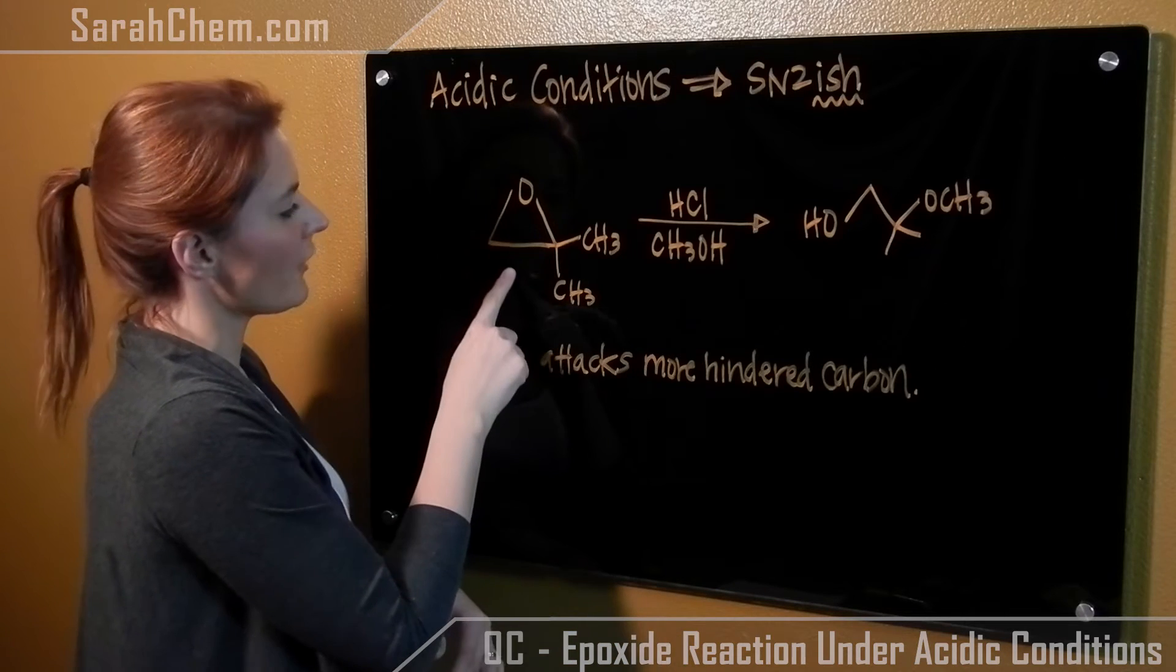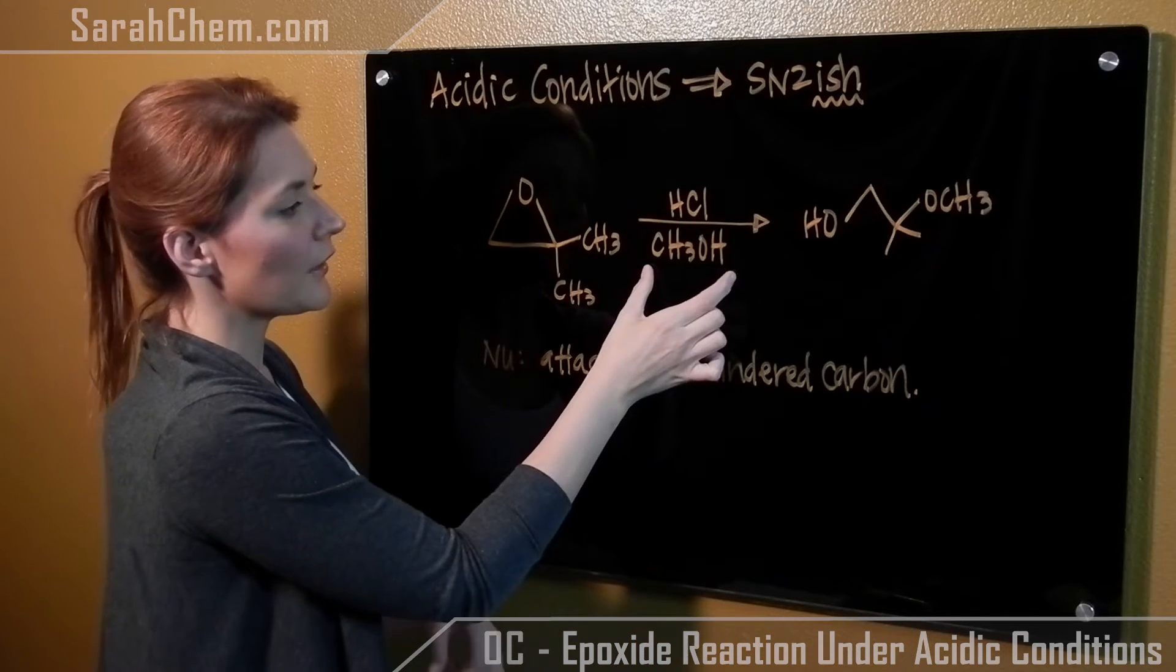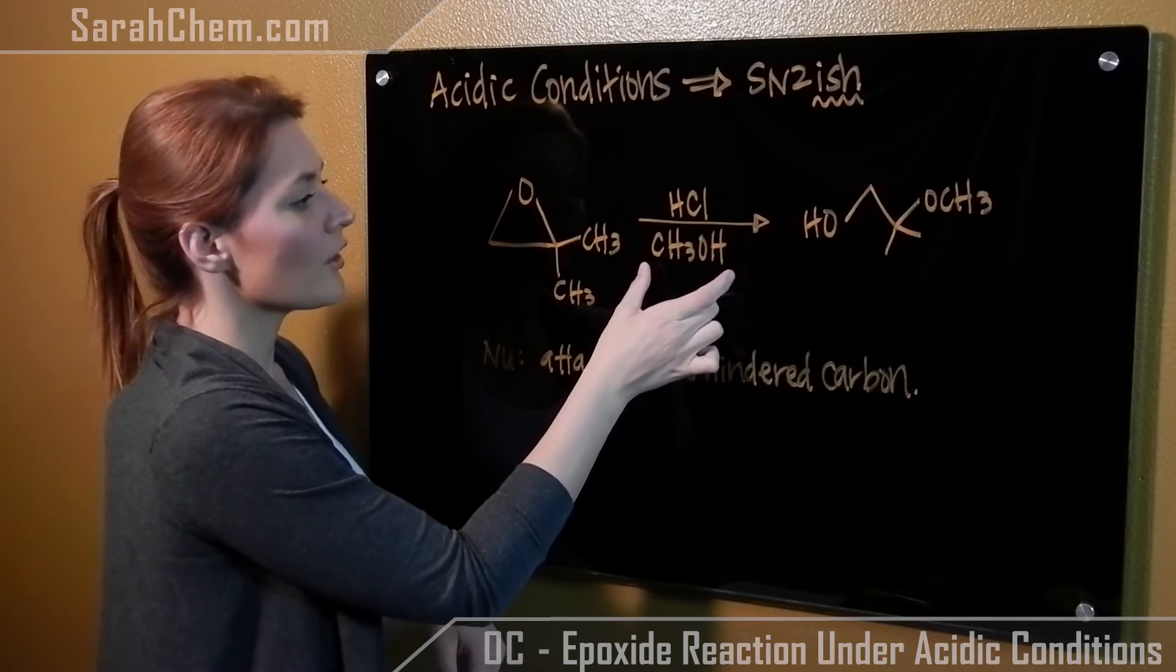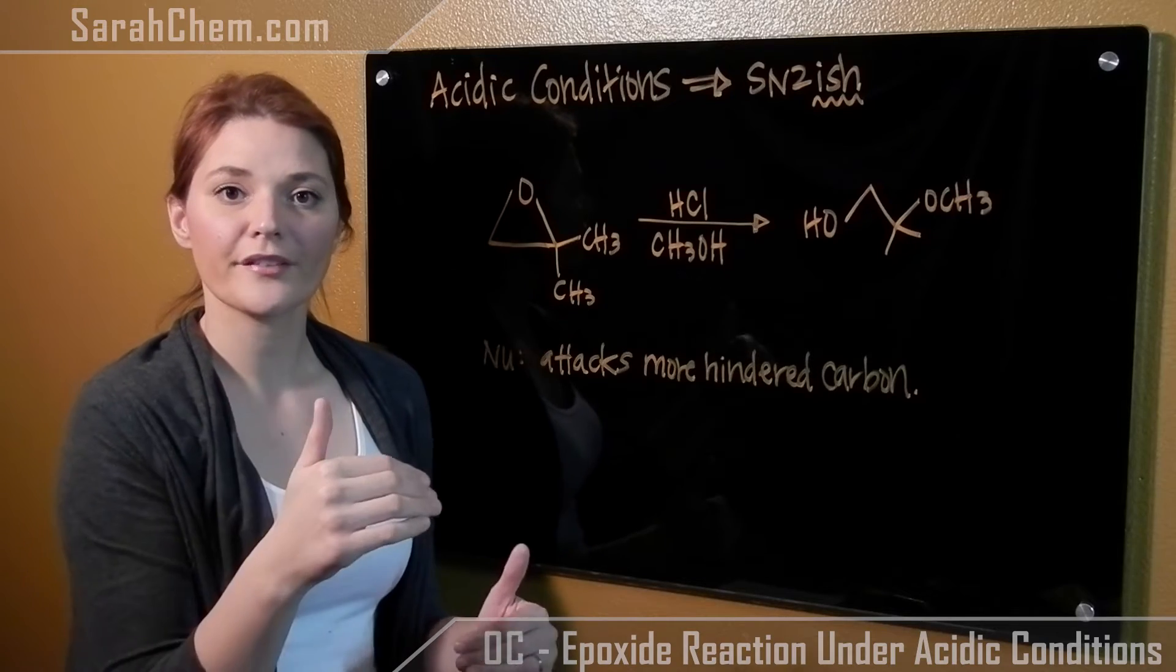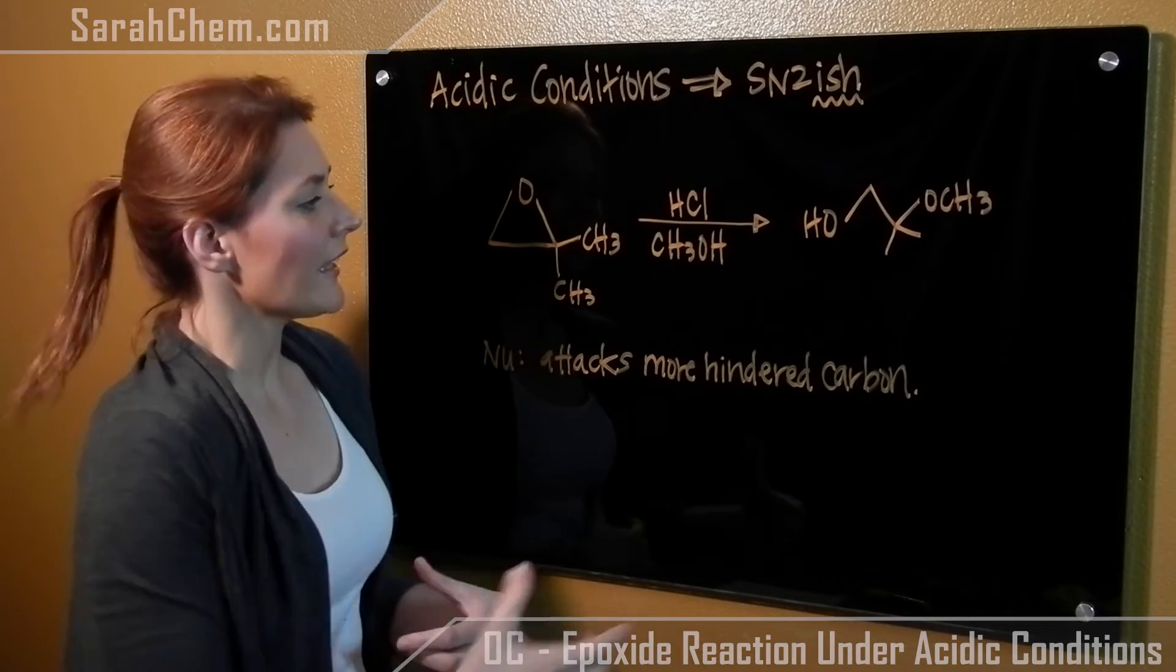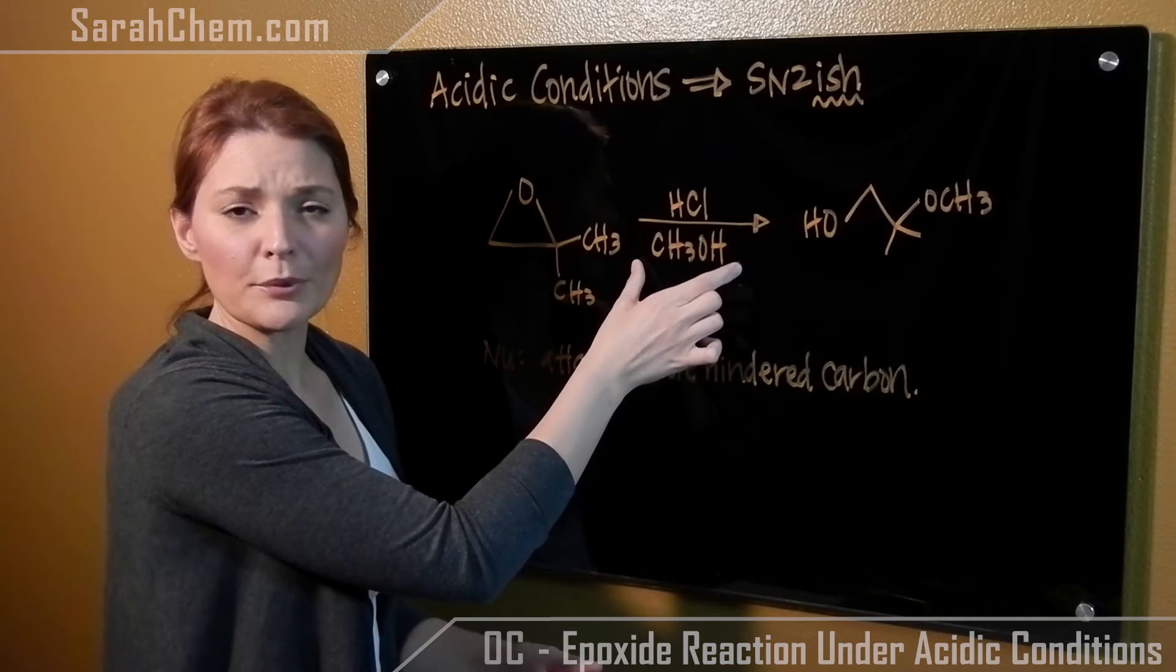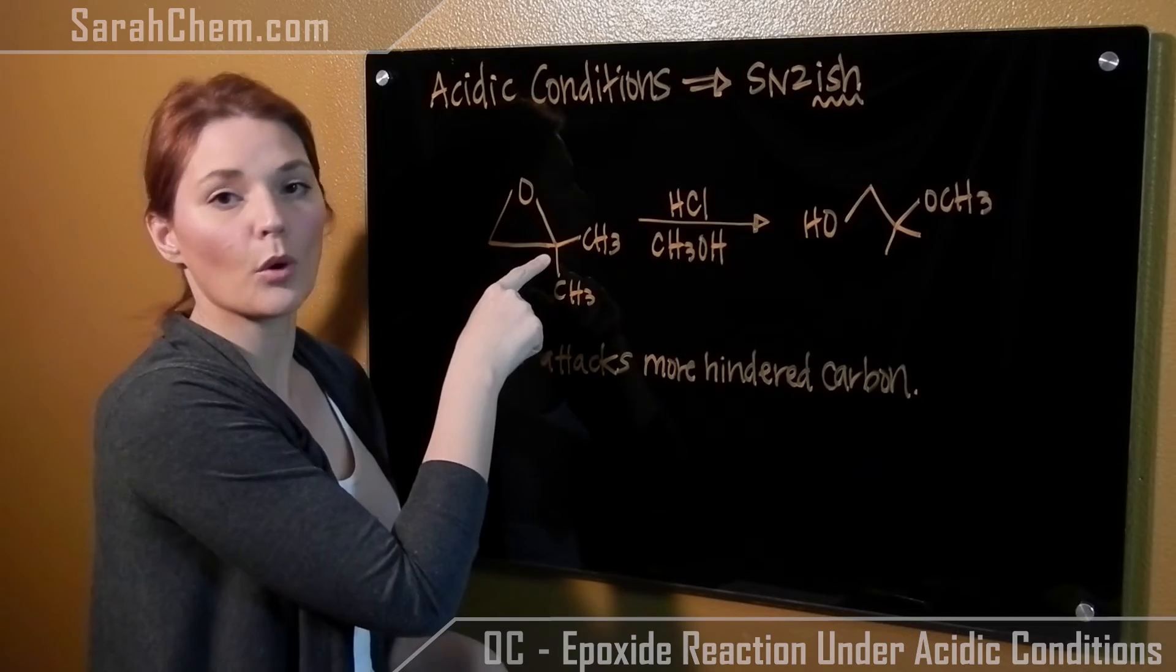So what happens is we have our epoxide and we have an acid and then our attacking nucleophile. The nucleophile is going to attack the more substituted carbon. There's still an attack where a nucleophile comes and then breaks the bond. The strange part though is that the nucleophile usually prefers to hit the less hindered carbon, but in this case we're going to hit the more hindered carbon.